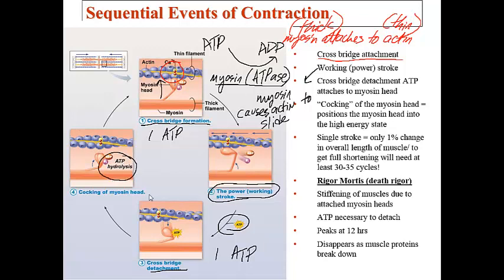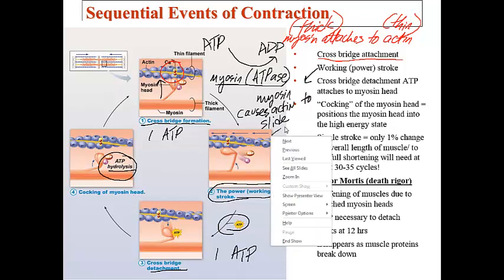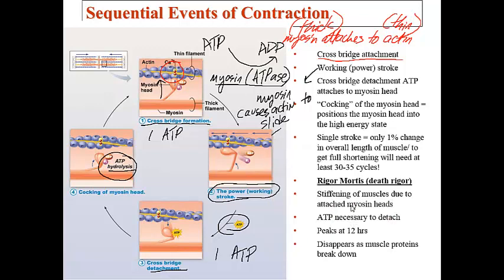For one sarcomere to shorten, 30 to 35 of these crossbridge cycles must occur, and that is only for one thick filament. On the much larger scale of thousands of sarcomeres shortening, there must be many, many crossbridges happening simultaneously.